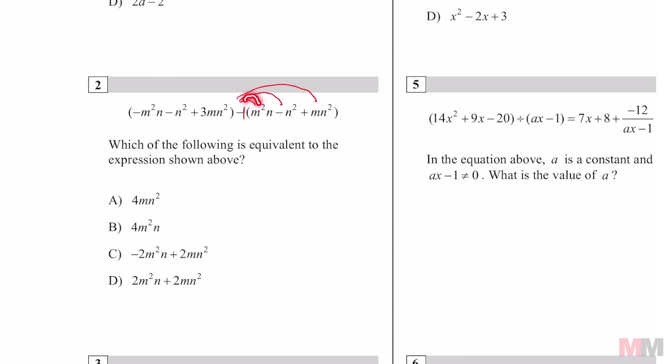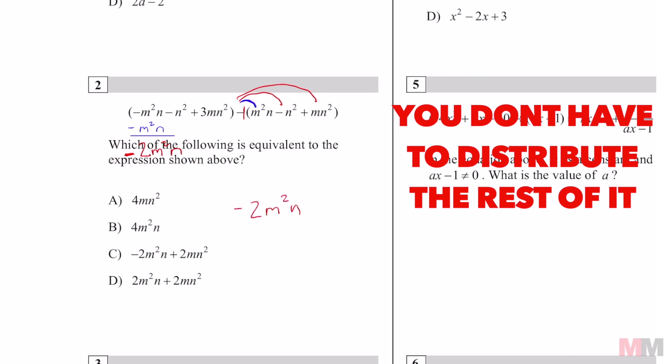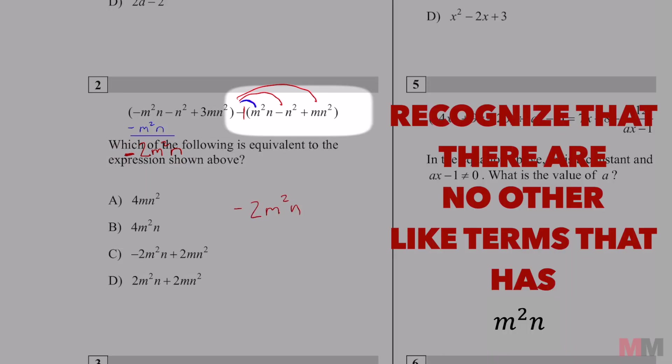Negative 1 times m squared n is going to be negative m squared n and that one's like terms with this one. So I'm going to write it right under here. Negative m squared n. That's the result of this blue one. So when I combine like terms you're going to see that the coefficient right here that's going to be negative 2 m squared n. I'm just going to write over the problem and you're allowed to write on the test so it does save me a little time when I write over stuff like that. And if you look at all the answer choices the only one with negative 2 m squared n is letter c.